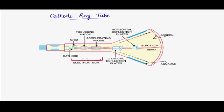The first segment is known as the electron gun. An electron gun consists of a filament, a cathode, a grid, and some anodes which are for focusing and accelerating purposes.